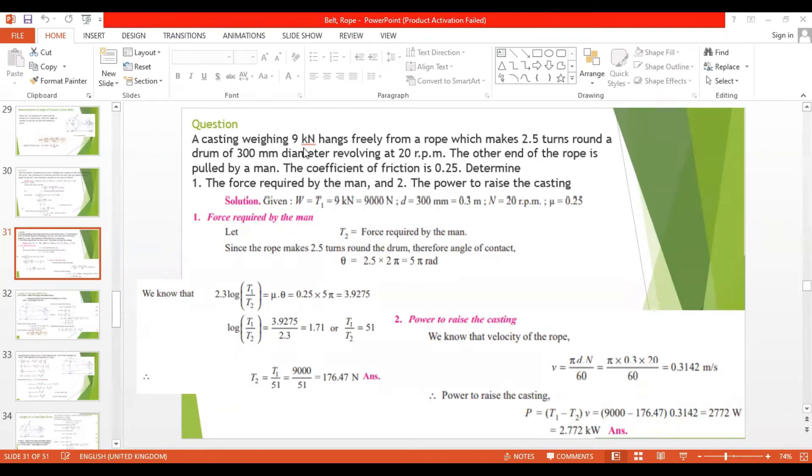A casting weighing 9 kilonewtons hangs freely from a rope which makes 2.5 turns around a drum of 300 millimeter diameter revolving at 20 rpm. So to visualize this, we'll draw a diagram. A weight is hanging.